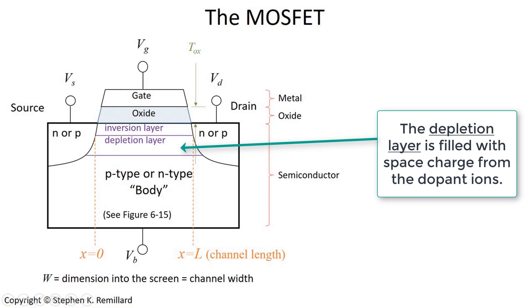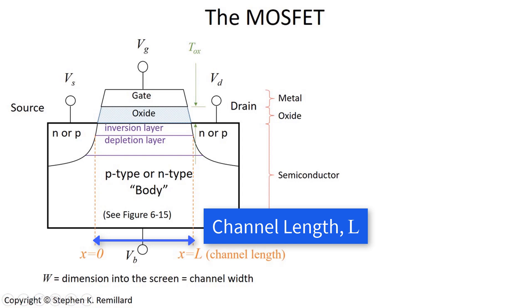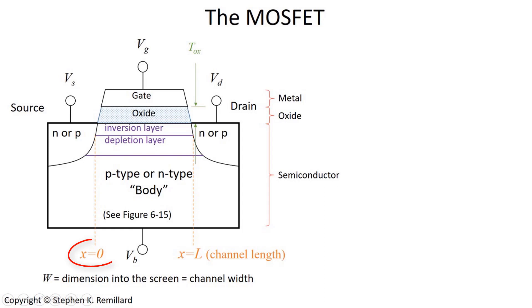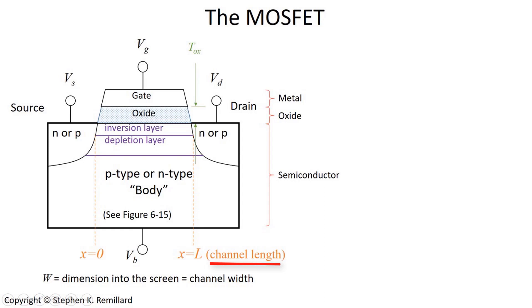Now we have a couple more geometrical factors to define. One important one is the channel length — the distance from the source to the drain. That involves defining a coordinate X, the horizontal coordinate, where X equals zero at the source. At the drain, X equals L, the channel length. It's the distance between the source and the drain — how far current will have to be pushed to get between them — and we're going to have to model that current.